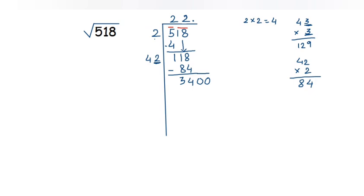Now the current quotient is 22. Ignoring the decimal point, double of 22 is 44. So I write 44 as the start of the new divisor. Along with 44, I need to find a new digit such that the digit in the ones place of the divisor and the new digit added to the quotient are the same. Again we use trial and error.